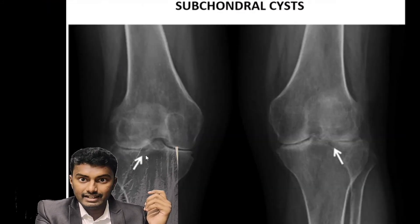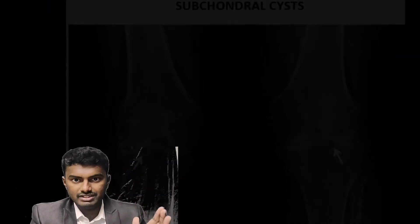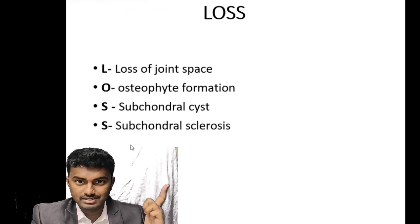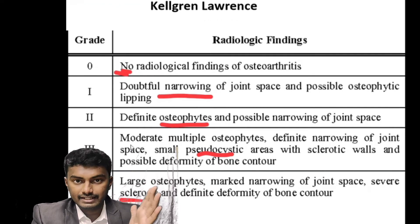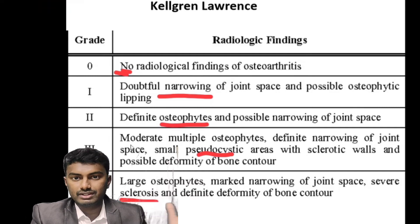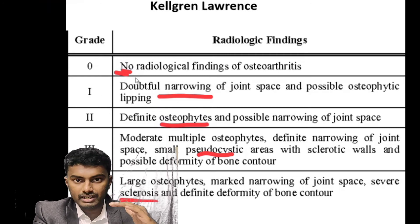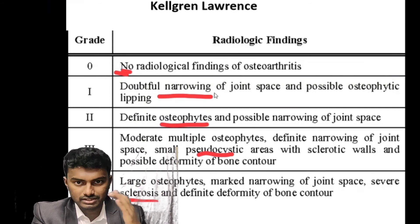And the next one is a lytic lesion in the bone enclosed within a pocket fluid cavity, called as a cyst. To remember the radiological features, just remember the mnemonic LOSS: L for loss of joint space, O for osteophyte formation, S for subchondral cyst, and S for subchondral sclerosis. The Kellgren-Lawrence grading system is used for the severity of osteoarthritis of the knee joint. Grade 0 is no abnormality, grade 1 is narrowing, grade 2 is osteophytes, grade 3 is subchondral cyst, and grade 4 is subchondral sclerosis.